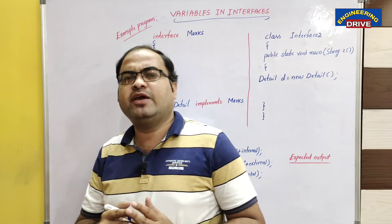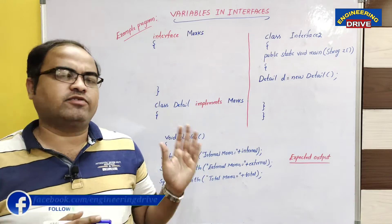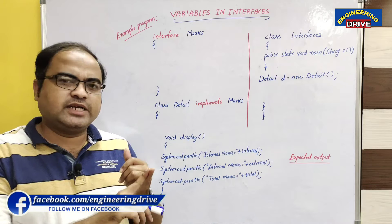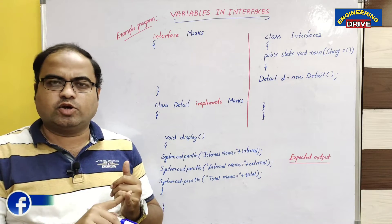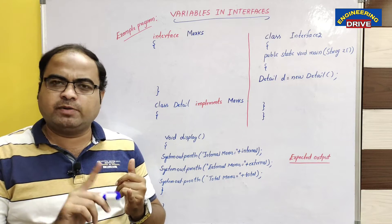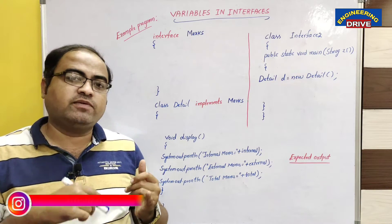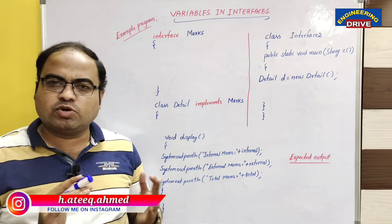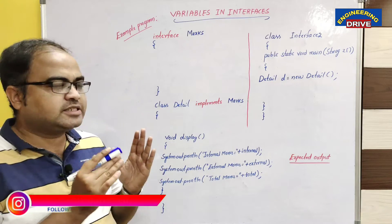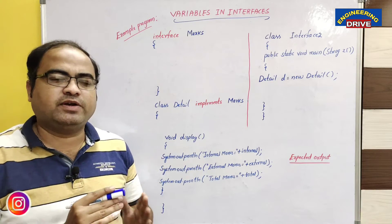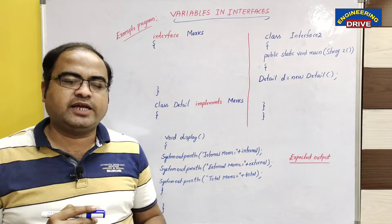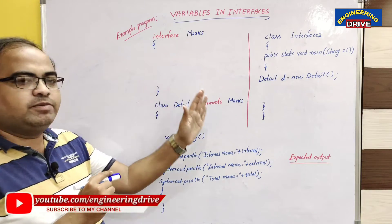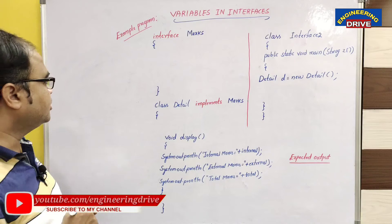What is the behavior of a variable when we use it in an interface? We can use variables in a class and it will show normal behavior. We can use variables even in abstract class also, it will show normal behavior, but there is some difference when we use a variable in an interface. I will be discussing this with an example program.